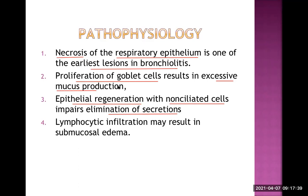This is a viral infection, so there is lymphocytic infiltration. These are inflammatory cells, and wherever they are present they cause inflammation and result in edema — submucosal edema. This edema leads to airway obstruction. The non-ciliated cells cannot eliminate secretion, so secretion is retained, also leading to airway obstruction. Excessive mucus production is already causing obstruction, and the necrotic epithelial cells form necrotic debris that acts like a small mass, also causing airway obstruction. All these mechanisms lead to airway obstruction in bronchiolitis.